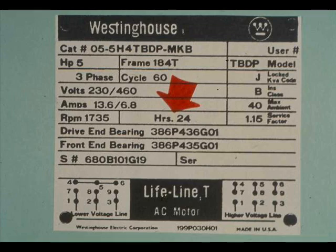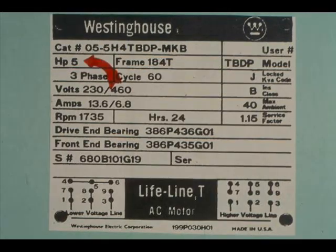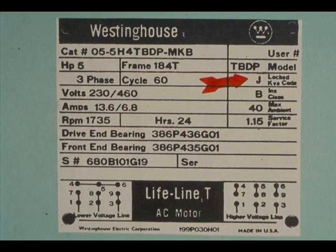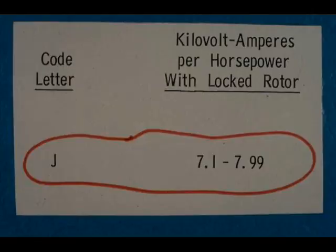On some nameplates this rating is listed as 'time'; on others, as 'duty.' Rated horsepower is a required listing for all motors of one-eighth horsepower or higher — this motor is rated at 5 horsepower. KVA means kilovolt amperes. The locked KVA code is an indication of the power per horsepower drawn from the electric power lines at the instant the motor is started. The code letter for this motor is J. The National Electrical Manufacturers Association has published a table showing codes and their equivalents; J equals 7.1 to 7.99 kilovolt amperes per horsepower.